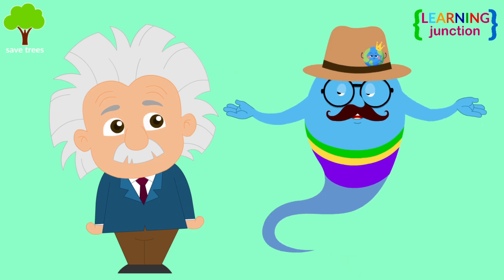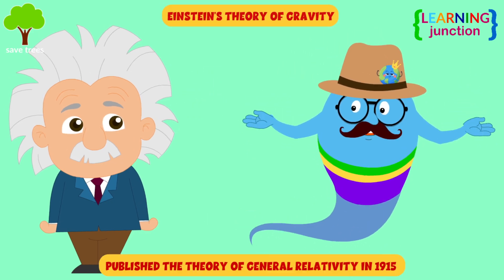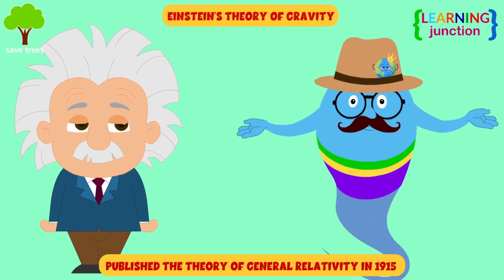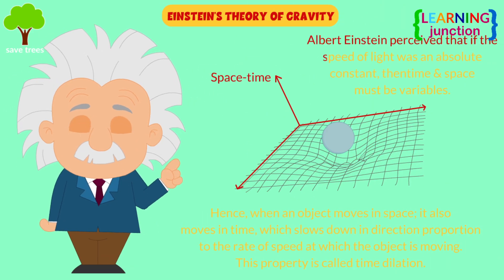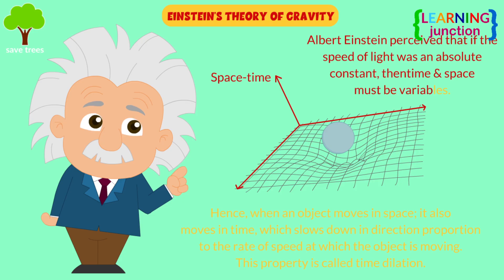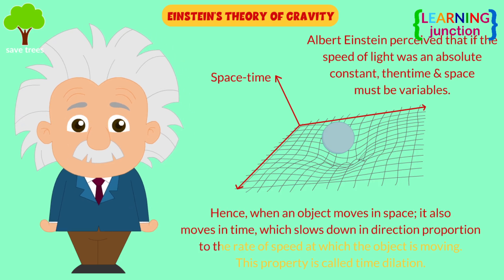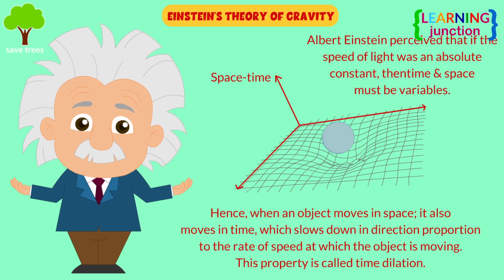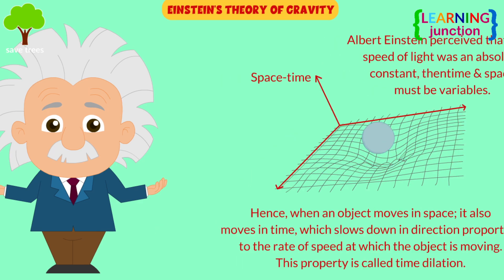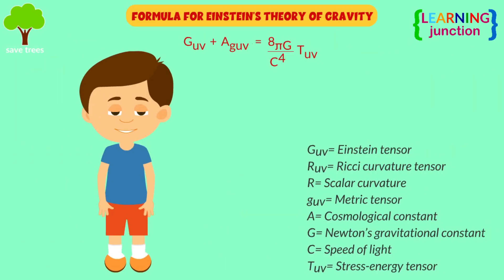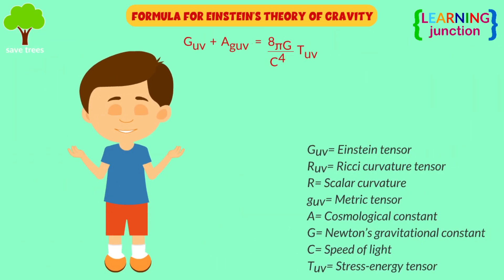New research supports Einstein's gravity theory. According to Albert Einstein's theory of general relativity, gravity is the result of distortions in space-time created by mass and energy. Here is the formula for Einstein's gravity theory.